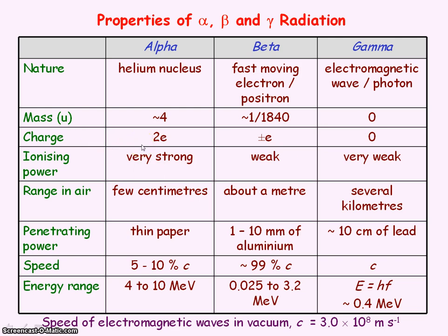The charge of an alpha particle is from the charge of the two protons, which is 2e, where e is the elementary charge, 1.6 times 10 to the minus 19 coulombs. The charge of a beta minus particle is minus e.